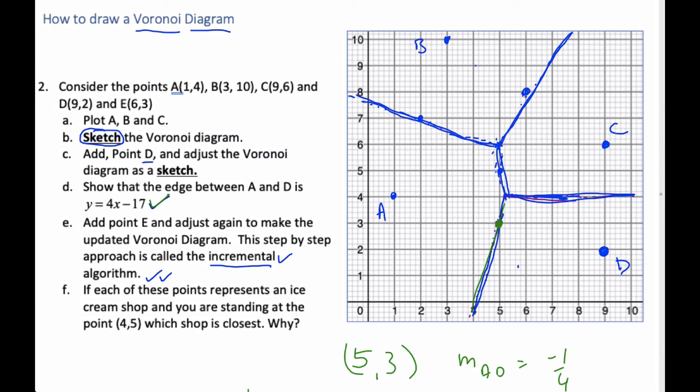Going to E now. E is the point six, three. So I go six, three. All right. So E is put into the cell with D. So I start with its perpendicular bisector. And I'm going to use purple for this. And so estimating here, here's the midpoint. And perpendicular is going to be here.